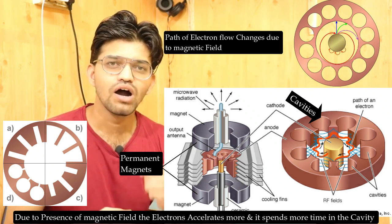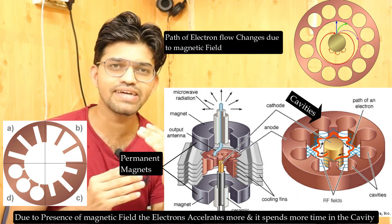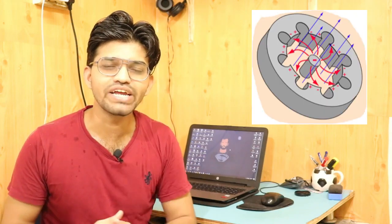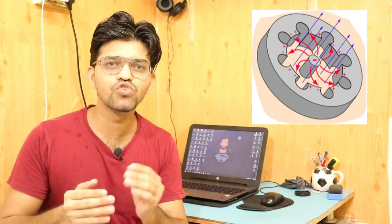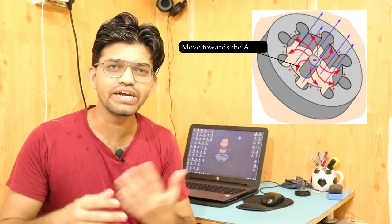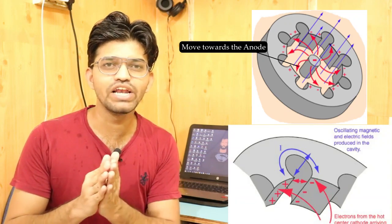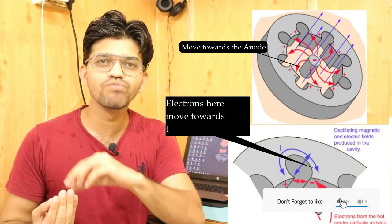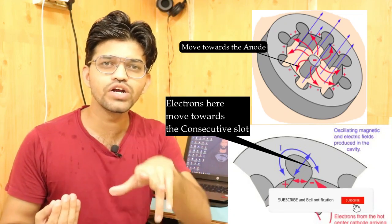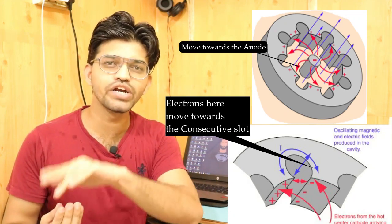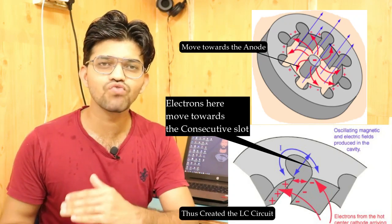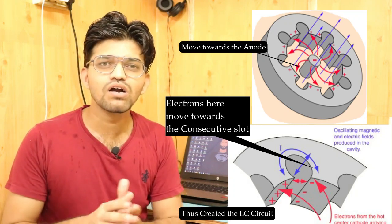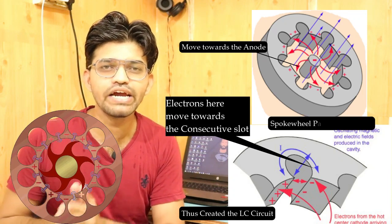When the cathode emits an electron into that space, let's track the movement of one electron. That electron moves towards the anode, which is already positively charged. The electrons inside the anode move to the consecutive slot or consecutive space — as you can see, the electron moves from one point to another — and this creates a curve or spoke-wheel pattern.